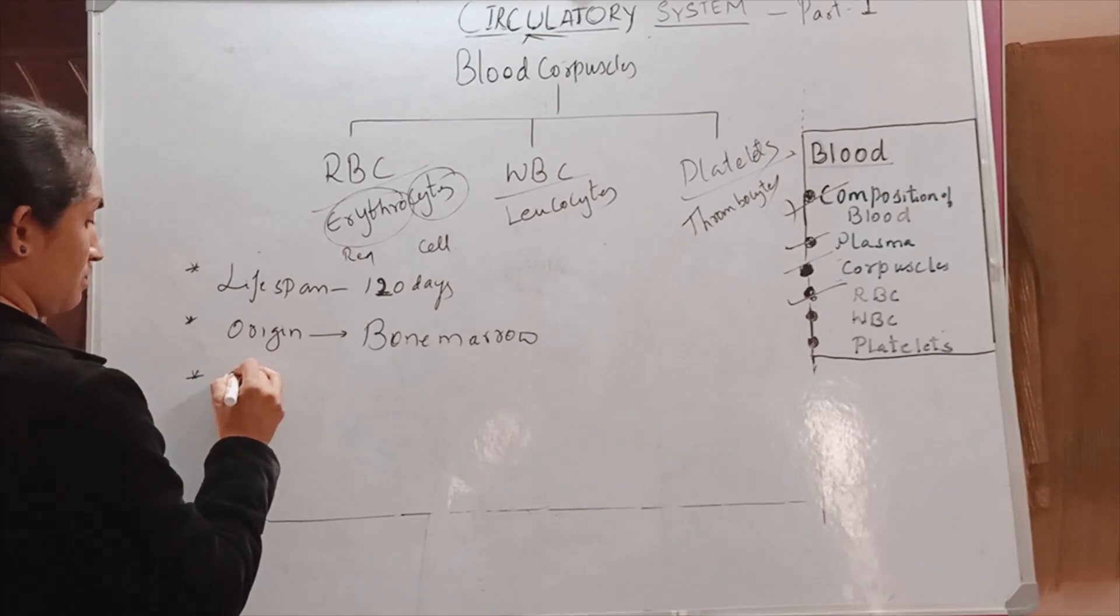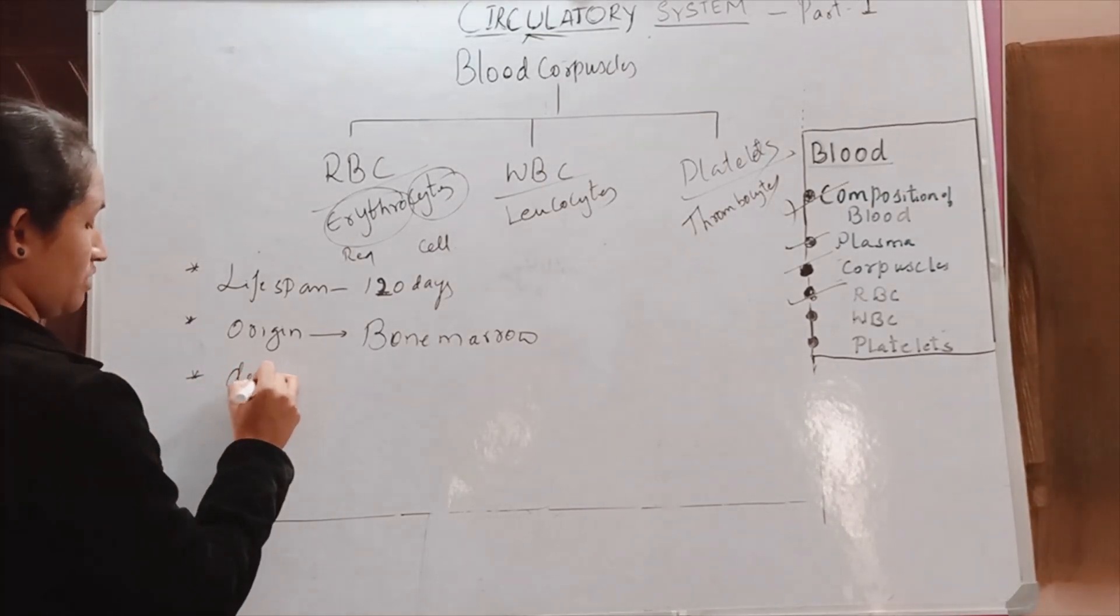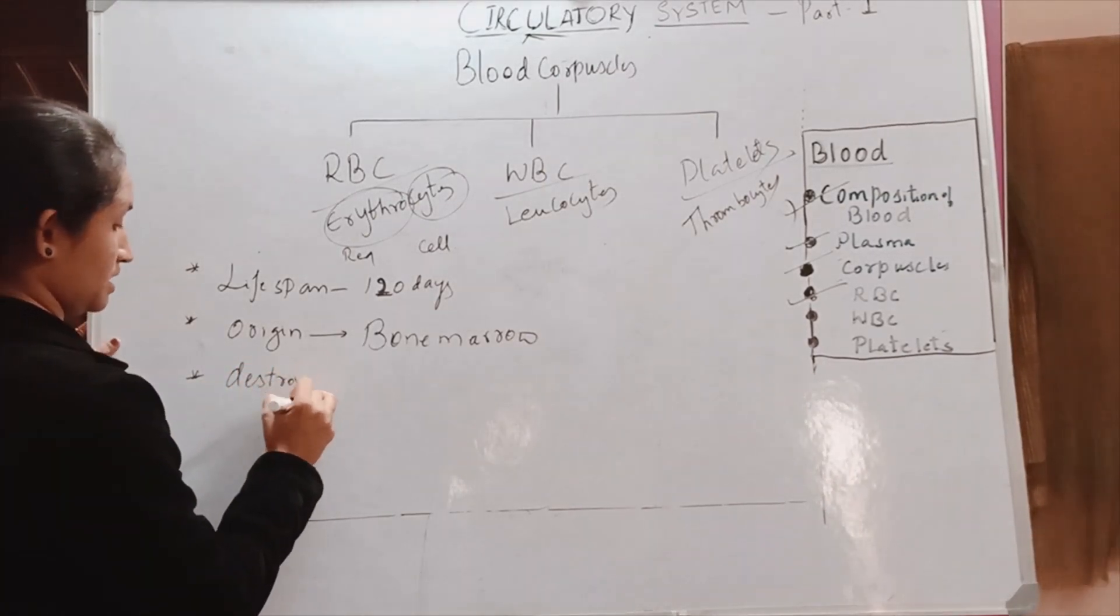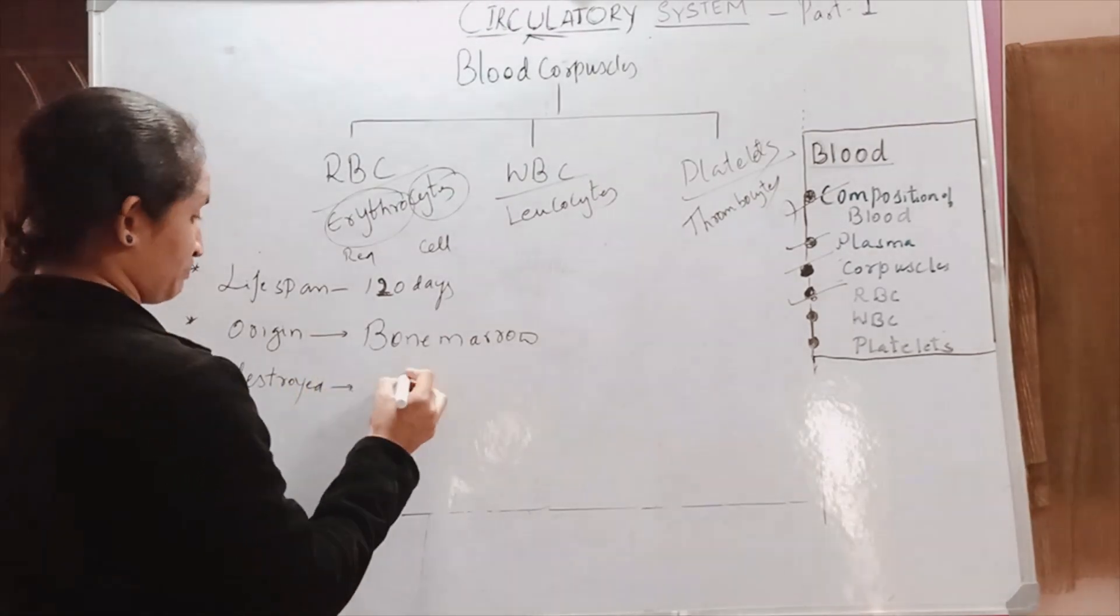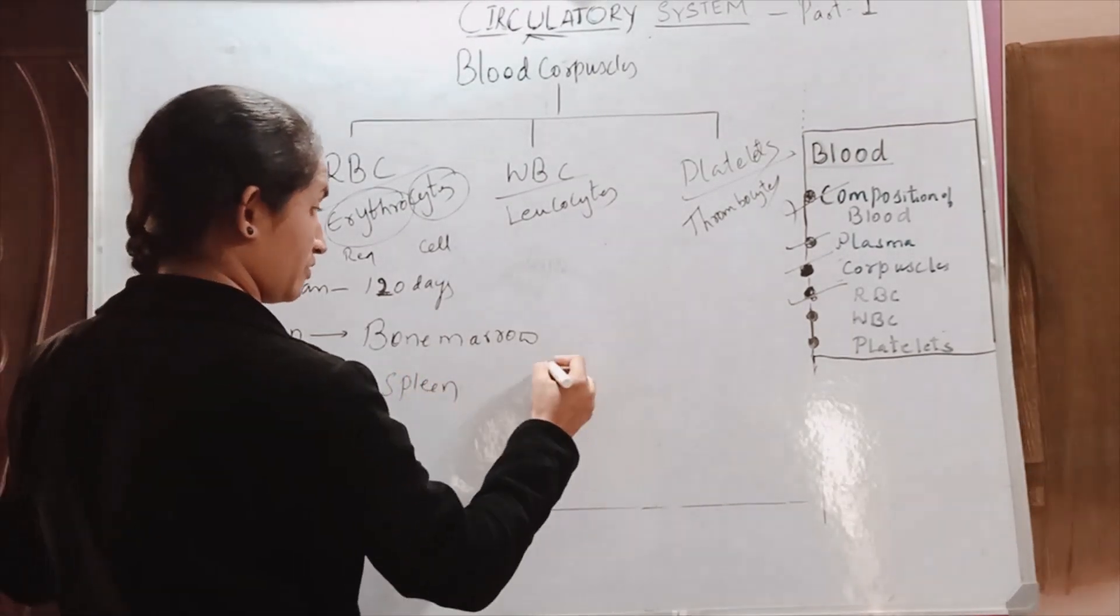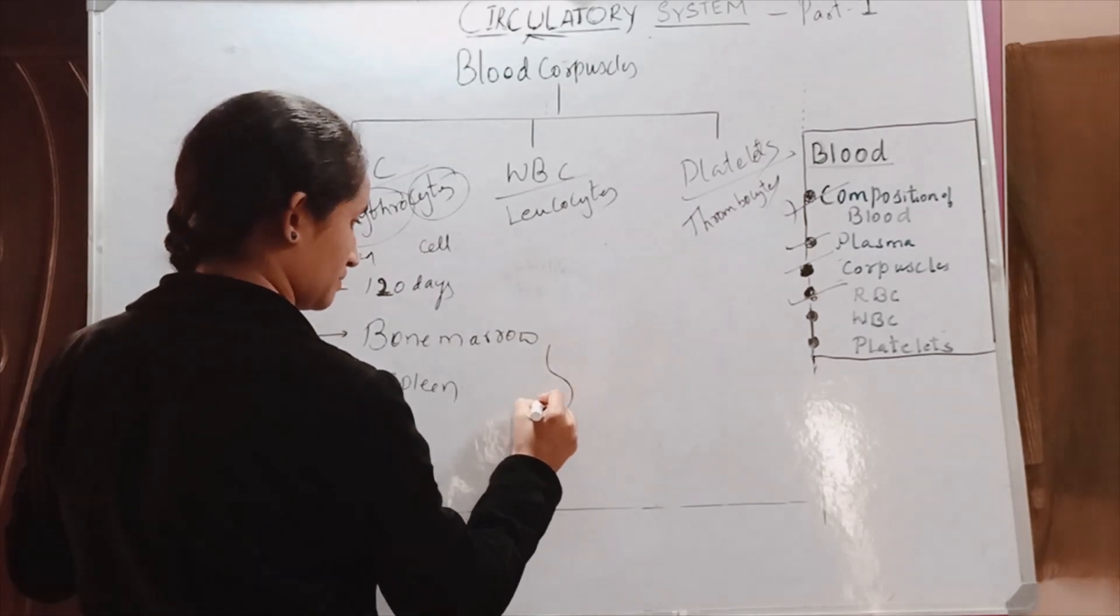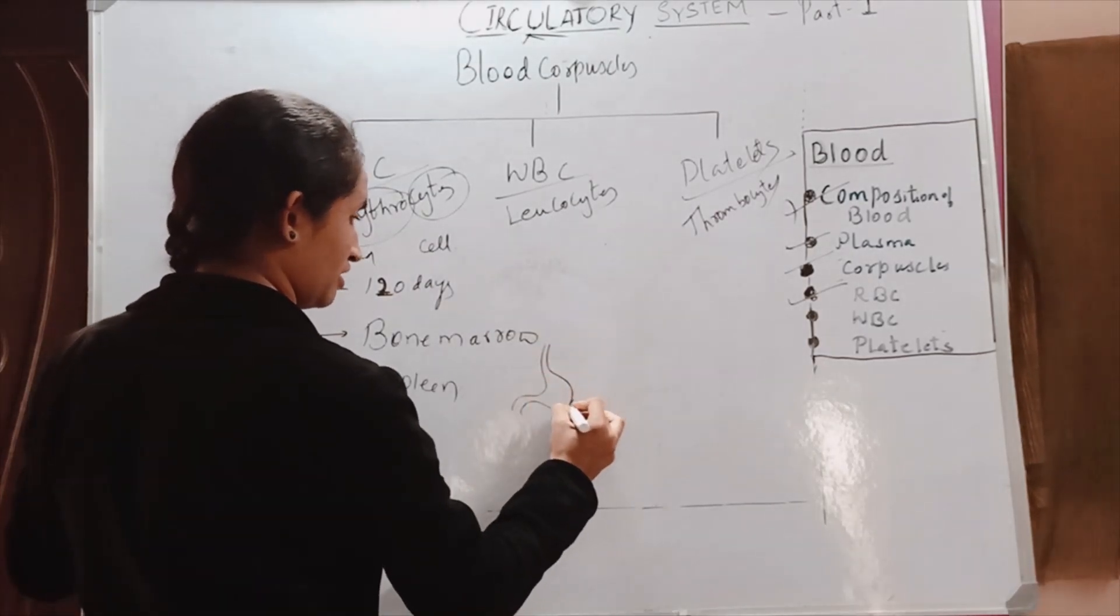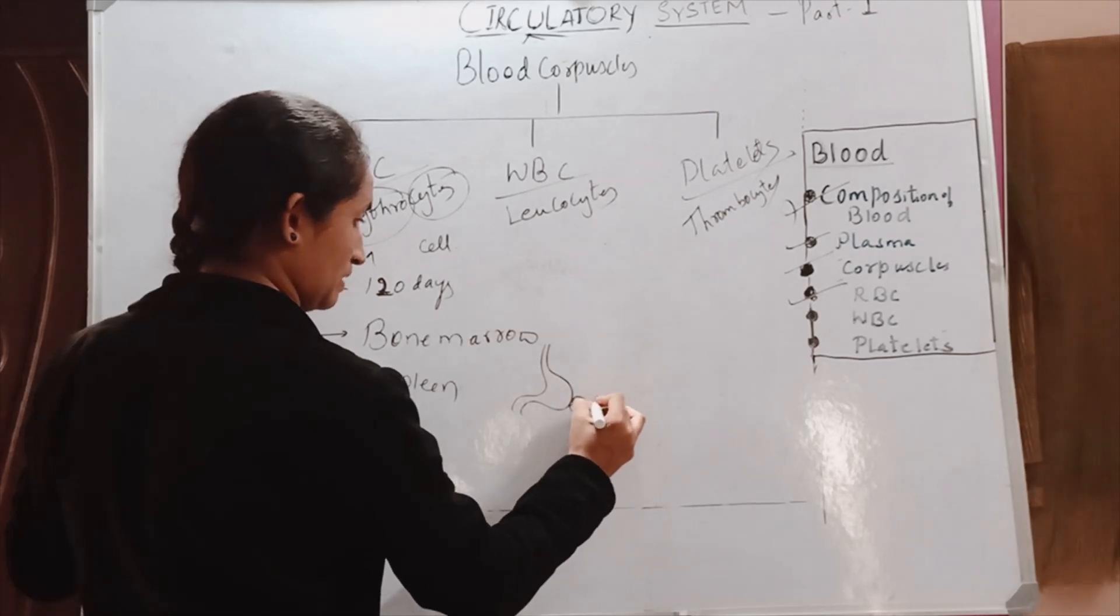Next, where do they destroy RBC cells? RBC cells are destroyed at spleen. Where is spleen present in our body? This is the stomach, and here you can find the structure called spleen.